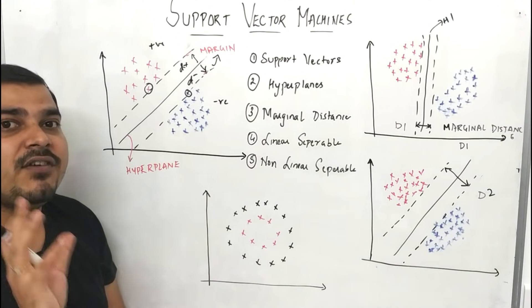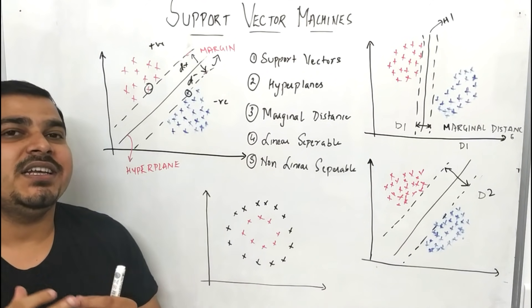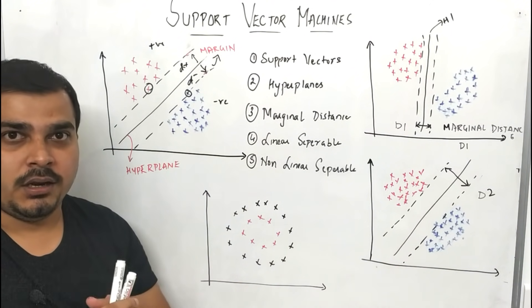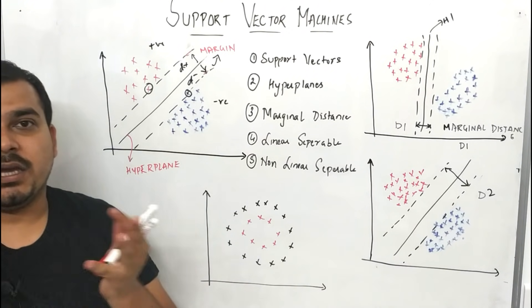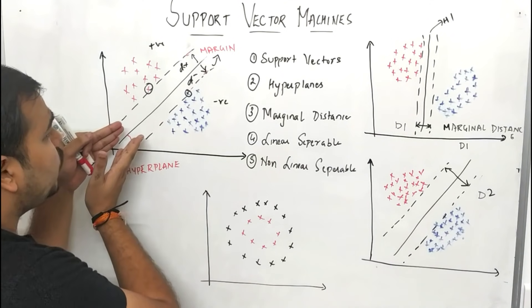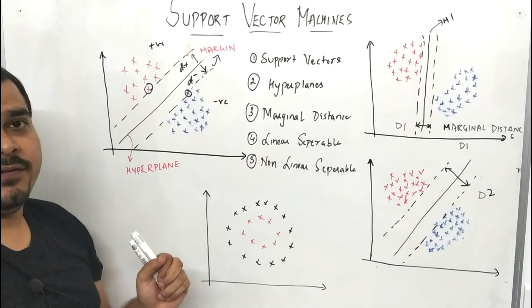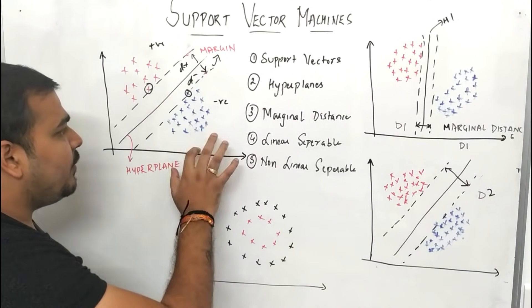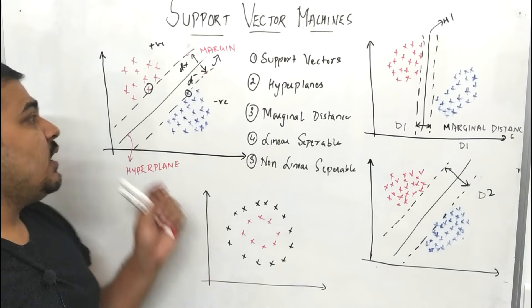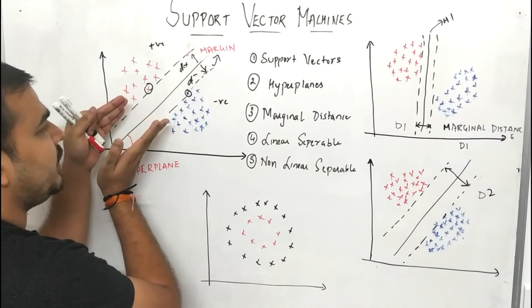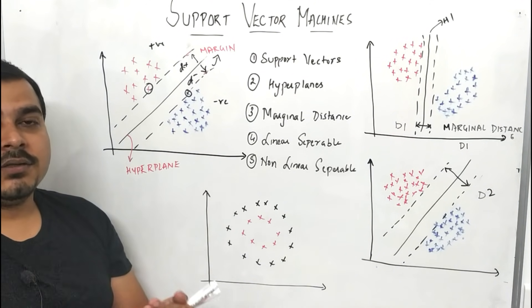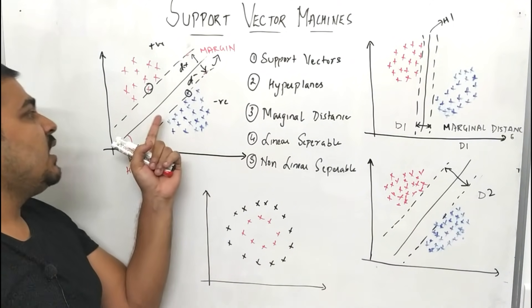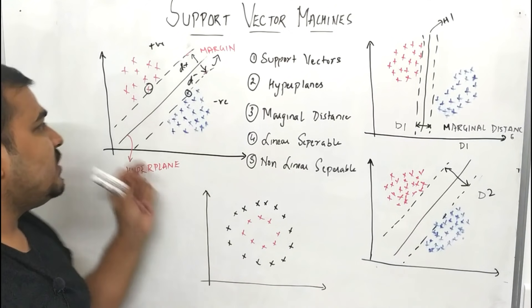What is the significance of this margin? We always have to create a generalized model whenever we apply a classification problem statement. In a generalized model, we usually get better accuracy for any kind of data. When we do this separation with respect to positive and negative points, any point above the hyperplane is classified as positive and any point below is classified as negative. This hyperplane gives us a cushion to divide positive and negative in a better way, so in test data this distance is pretty important.